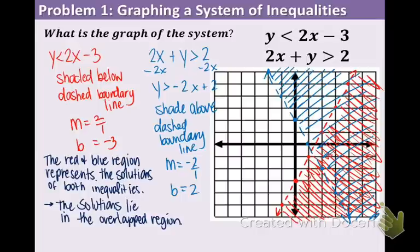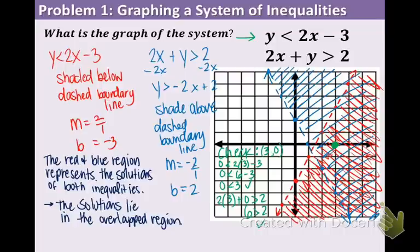We can check by plugging in a point from the shaded region. I'll choose the point (3, 0). For the first inequality: 0 is less than 2 times 3 minus 3, which gives 0 is less than 3 — yes, that works. For the second: 2 times 3 plus 0 is greater than 2, giving 6 is greater than 2. As long as the point works for both inequalities, that confirms you shaded the right region.